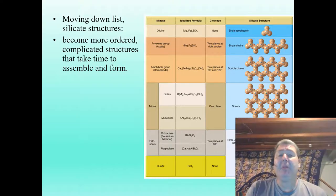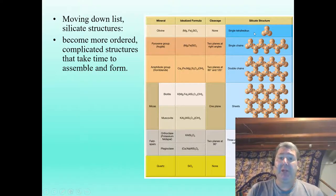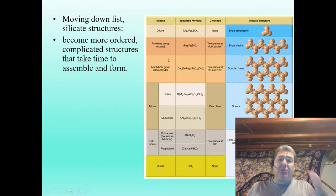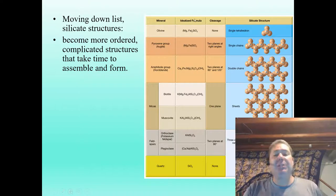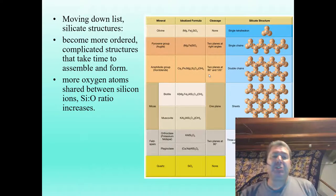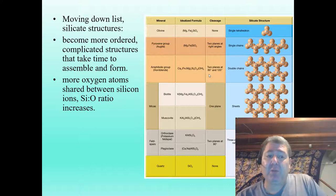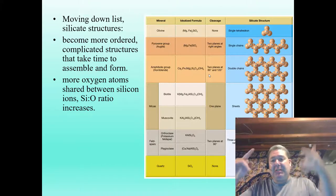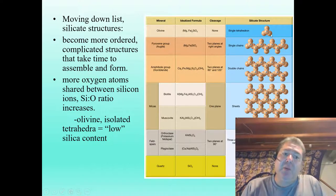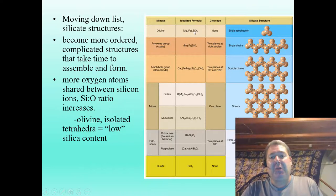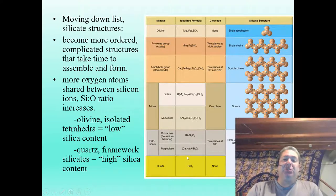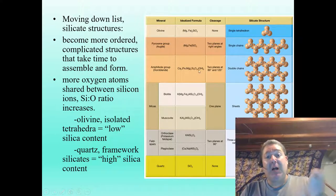Moving down the silicate structure list, things become more ordered and complicated, requiring slower cooling in large magma chambers. More and more oxygen atoms are shared between silica tetrahedra, increasing the ratio of silica to oxygen. Olivine at the top is a low-silica-content mineral — one silica per four oxygens — while quartz, a framework silicate, is high in silica content — one silica per two oxygens.